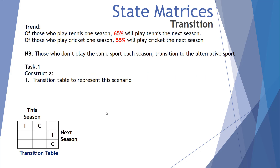Task one: construct a transition table to represent the scenario — this is a recap of transition matrices skills. The transition from tennis to tennis is 0.65, and from tennis to cricket is 0.35. The transition from cricket to tennis next season is 0.45, and from cricket to cricket next season is 0.55. Note that vertically these columns have to add up to one — they are a probability distribution.